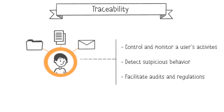Finally, there is traceability, which allows monitoring a user's activity. It answers the questions: who, did what, when, and why. Traceability also helps detect suspicious behavior, such as repeated attempts to log in during non-business hours or sending sensitive attachments, triggering alerts in case of such activities. This is crucial for compliance with regulations like PCI DSS, ISO 27001, or GDPR. The recorded traces are essential during audits.